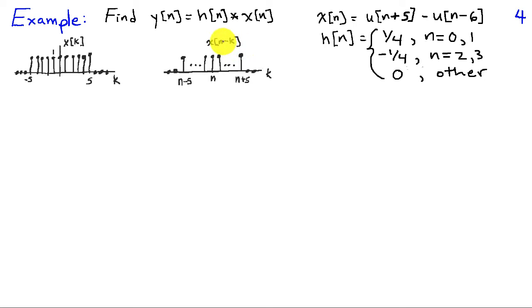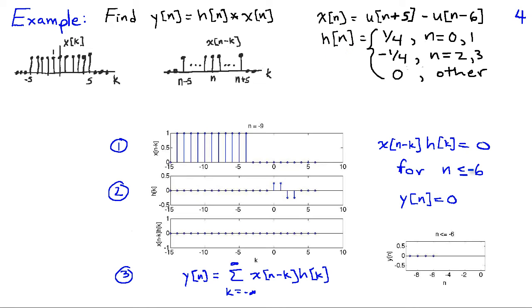Now we're going to take different values of n and take the product of this times h of k and evaluate our convolution sum. So I'm going to start with n equals minus 9. And in that case, x of n minus k goes from minus 14 to minus 4. And it's 0 thereafter. Well, h of k is 1 quarter for k equals 0 and 1. And it's minus a fourth for k equals 2 and 3. So there's no overlap between the non-zero portions of these two functions. And the product therefore is 0.